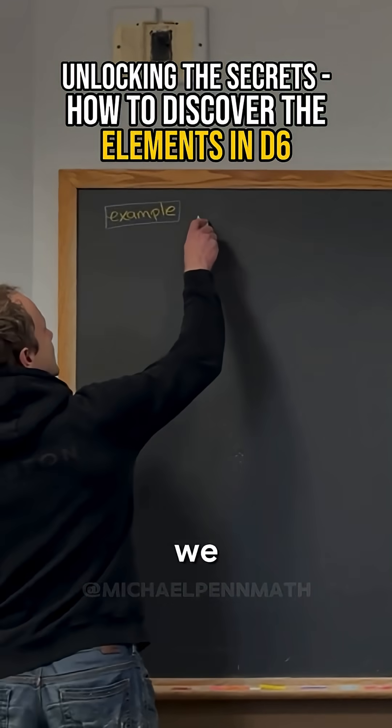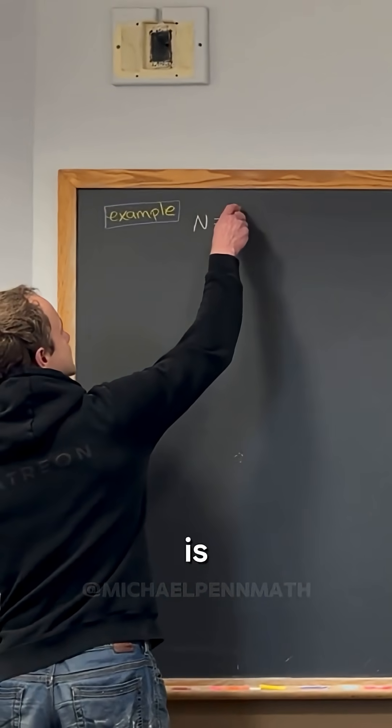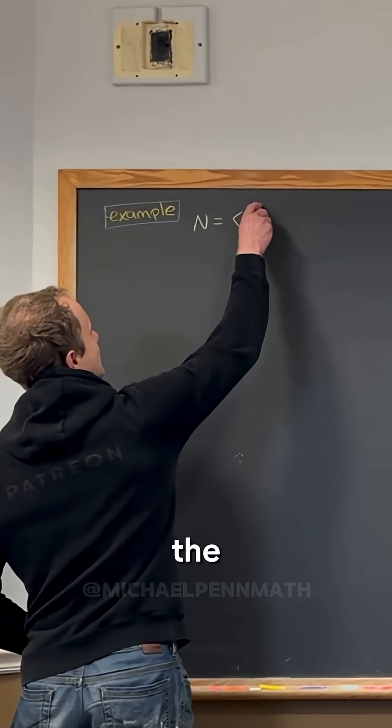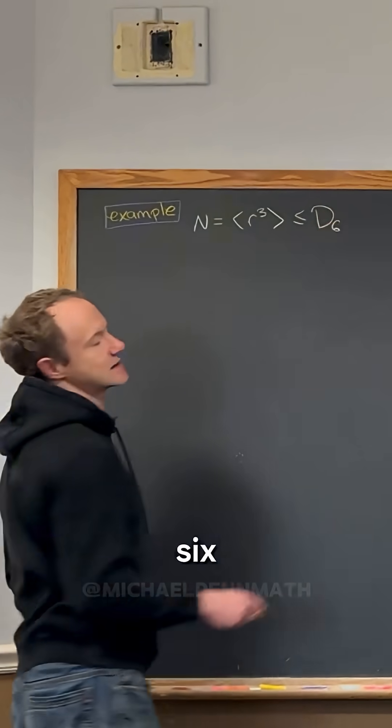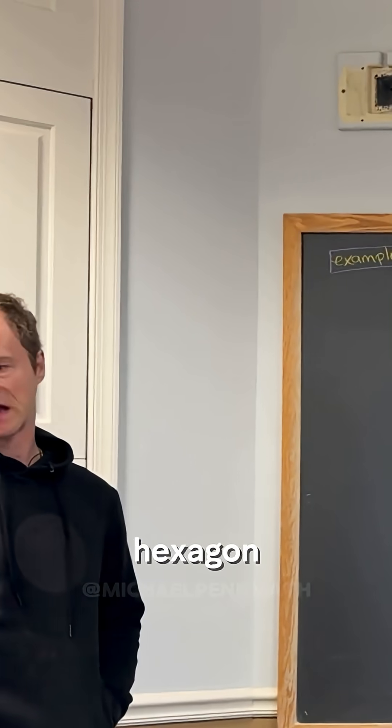So let's look at an example before we get started. Let's say that N is this subgroup, the subgroup generated by r cubed of D6. So that's the symmetries of a hexagon, right?